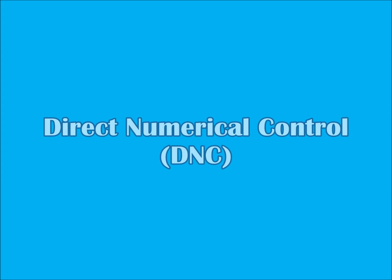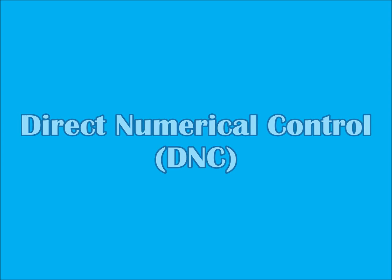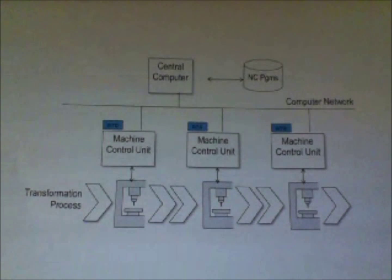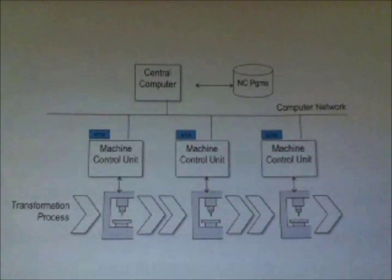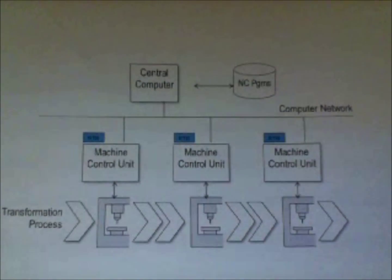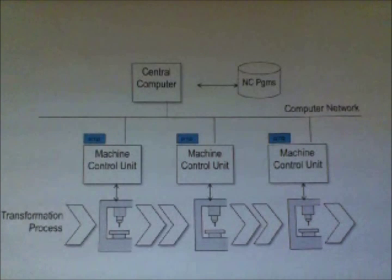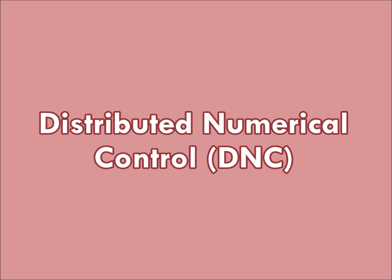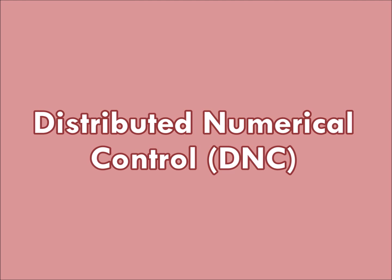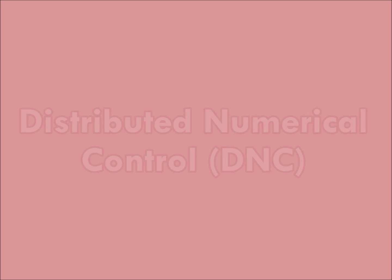The second type of numerical control is direct numerical control, or DNC. Direct numerical control is the control of multiple machine tools by a single or mainframe computer through direct connection in real time. Currently, direct numerical control is being replaced by distributed numerical control, also called DNC. This distributed DNC is a network consisting of a central computer connected to machine tool MCUs, which are CNC machines.